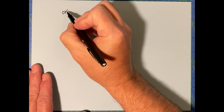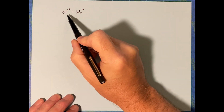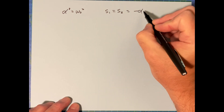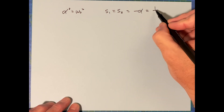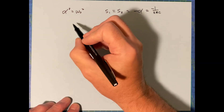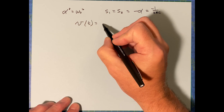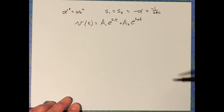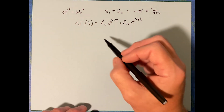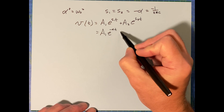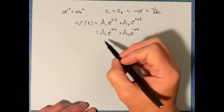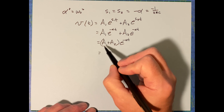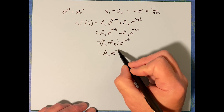For the critically damped solution, we have the case where alpha squared equals omega naught squared. In that case, S1 equals S2, and they're both equal to just minus alpha — which is one over 2RC. Going back to the original form A1·e^(S1·t) + A2·e^(S2·t), since S1 and S2 are equal, this becomes (A1 + A2)·e^(-alpha·t), which is just a single coefficient times e^(-alpha·t).